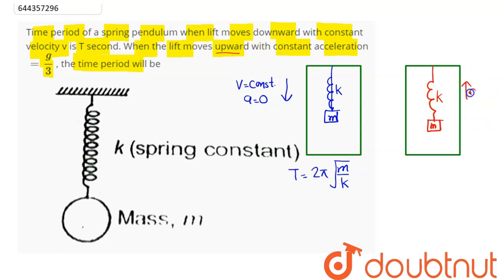So we can say here the time period in this question is independent of acceleration. That is, it still remains to be 2π under root of m by k, which here is our time period as T.